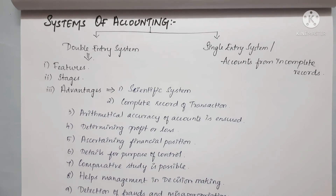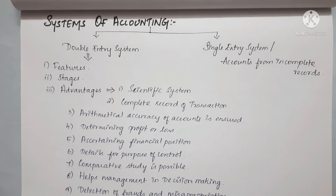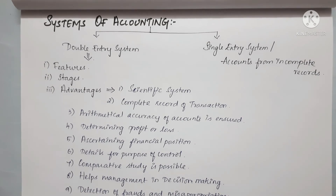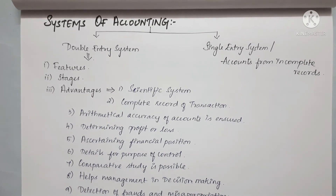The advantages of the Double Entry System include: it is a scientific system, it maintains complete records of transactions, ensures arithmetical accuracy of accounts, helps in determining profit or loss, determining financial position, provides detail for the purpose of control, enables comparative studies, helps management in decision making, and aids in detection of frauds and misappropriations.